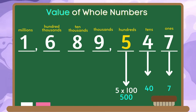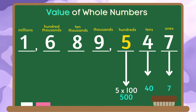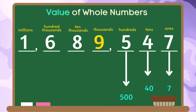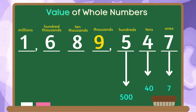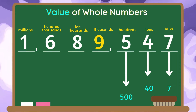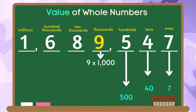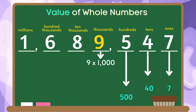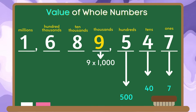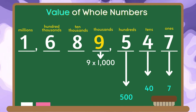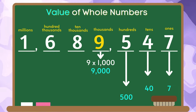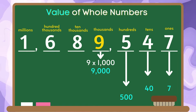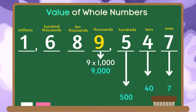The place value of the digit 9 is thousands. We are going to multiply 9 by 1,000. 9 times 1,000 is equal to 9,000. Therefore, the value of the digit 9 is 9,000.